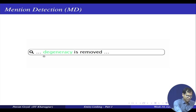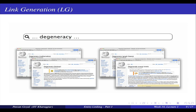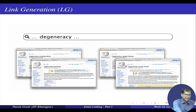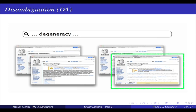Let us see these steps in the context of wikification. You have a sentence 'degeneracy is removed' with some surrounding words. Mention detection identifies that the word 'degeneracy' is to be linked — shown in green. The second part, link generation, finds all possible Wikipedia pages: degeneracy in mathematics, in biology, in graph theory, and degenerate energy levels — four possible links. Then disambiguation: among the four links, what is the most appropriate? The answer is 'degenerate energy levels' is the appropriate entity for this mention of 'degeneracy'. These are the three steps for entity linking.